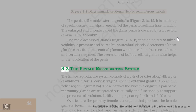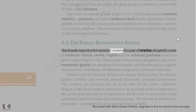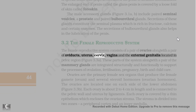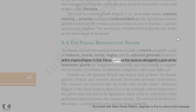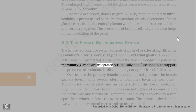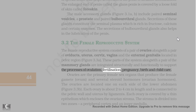The female reproductive system consists of a pair of ovaries along with a pair of oviducts, uterus, cervix, vagina, and the external genitalia located in the pelvic region. These parts of the system along with a pair of mammary glands are integrated structurally and functionally to support the processes of ovulation, fertilization, pregnancy, birth, and child care.